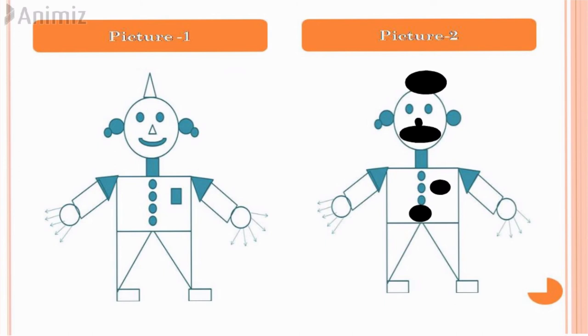After that, here is a small circle which is missing in the second picture. Let's mark it.